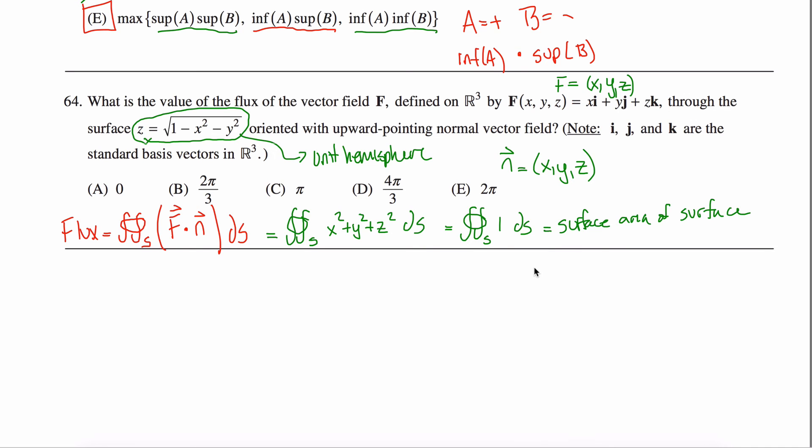So what is this surface area of a unit hemisphere? A sphere has surface area of—what—4 thirds pi r cubed? No, that's volume. 4 pi r squared. That's not a 4, let's try this again. 4 pi r squared.